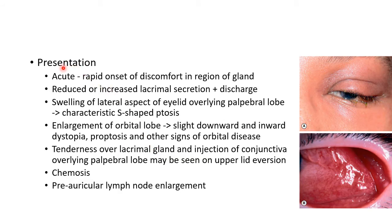In acute dacryoadenitis, there is rapid onset of discomfort in the region of the gland and reduced or increased lacrimal secretion with discharge. Swelling of the lateral aspect of the eyelid overlying the palpebral lobe leads to the characteristic S-shaped ptosis. Enlargement of the orbital lobe can cause slight downward and inward dystopia, proptosis, and other signs of orbital disease. There can also be tenderness of the lacrimal gland, injection of conjunctiva overlying the palpebral lobe (visible on upper lid eversion), chemosis, and preauricular lymph node enlargement.